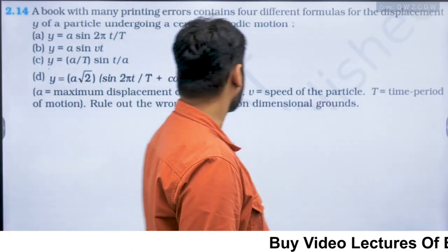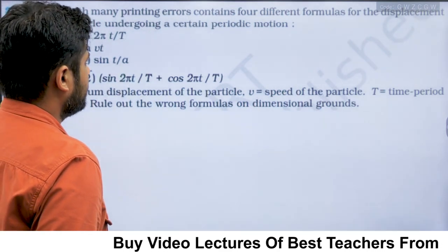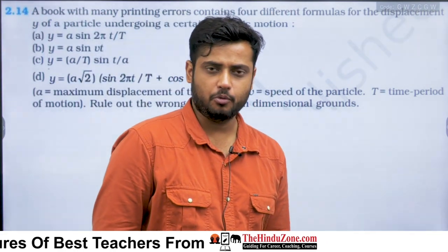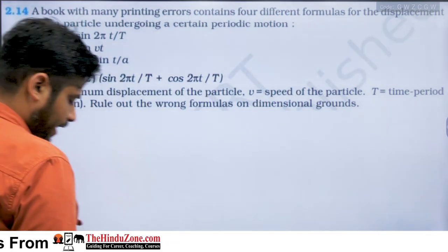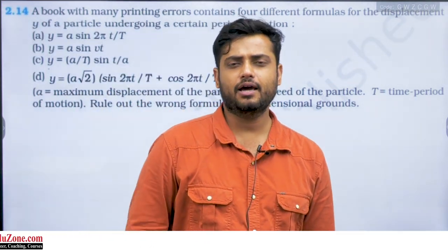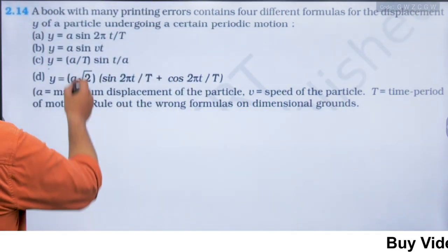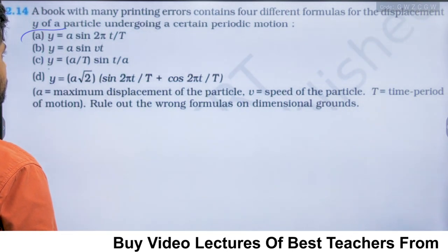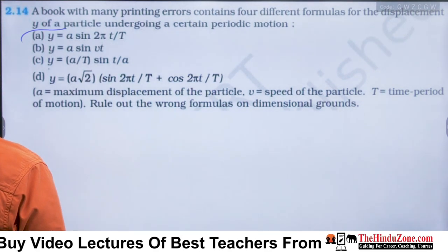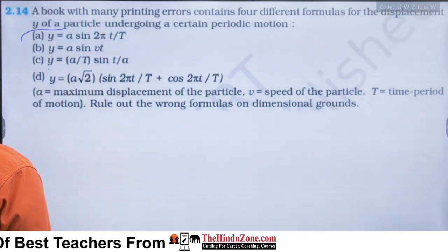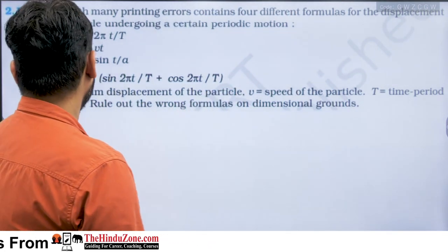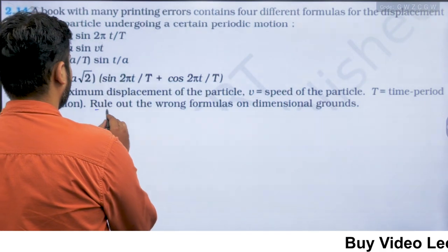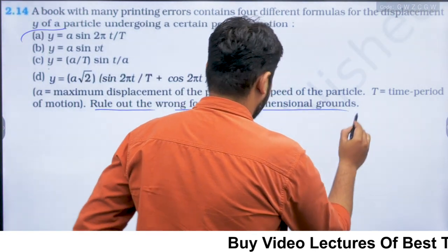The next question: a book with many printing errors contains four different formulas for displacement y of a particle undergoing periodic motion. Some formulas in the book have printing mistakes. We have to rule out the wrong formulas on dimensional grounds.